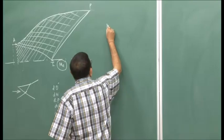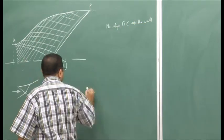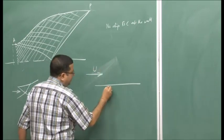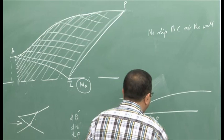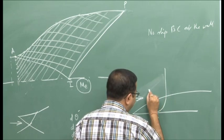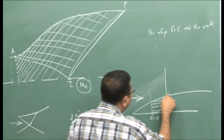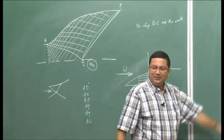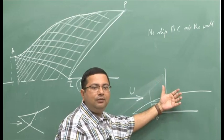Therefore, there should be no-slip at the wall, which means if the flow is going like this, the velocity at the wall should be zero, and then we have a boundary layer. Across this boundary layer, there is a gradual increase in flow velocity until it reaches the free stream velocity. So the velocity profile looks like this — only at the edge of the boundary layer does it reach the free stream velocity. However, for this method we have considered everything as free stream flow; we have not considered this boundary layer, and that can to a certain extent bring in a lot of errors.